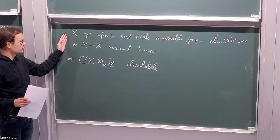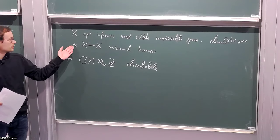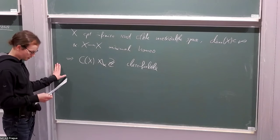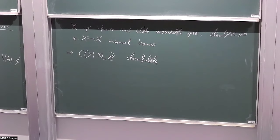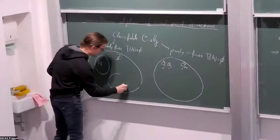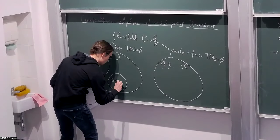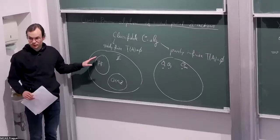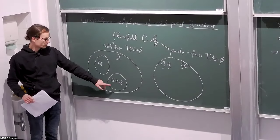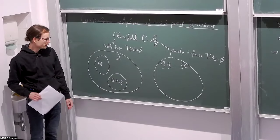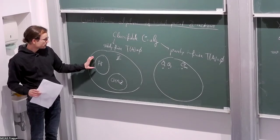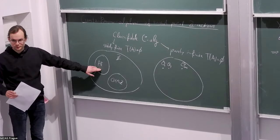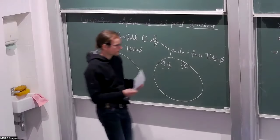These are standing assumptions: whenever I write X I mean such a space, and whenever I write alpha I mean such a minimal homeomorphism. These cross-products will be somewhere in this picture. First, they will always be stably finite because they always have traces. The trace on the cross-product corresponds to an invariant measure on the space X, and those always exist. Also, this circle is disjoint from the AF algebras and does not include the Jiang-Su algebra, and the reason for that is the next theorem.